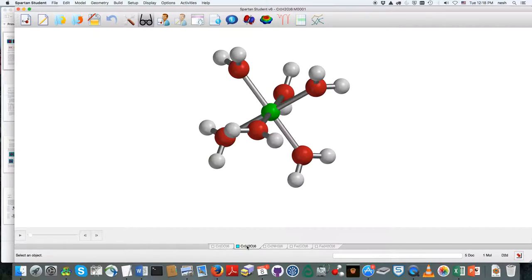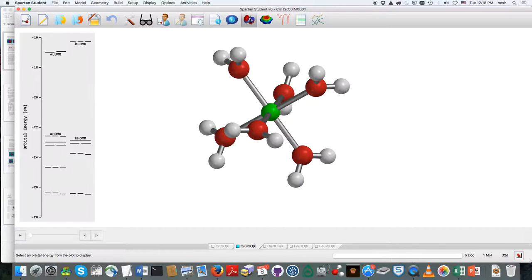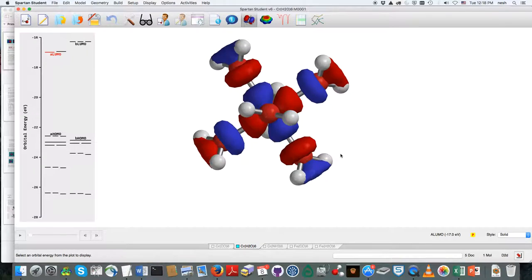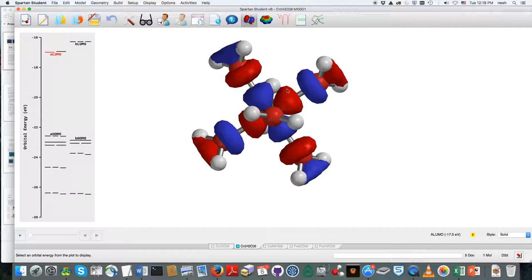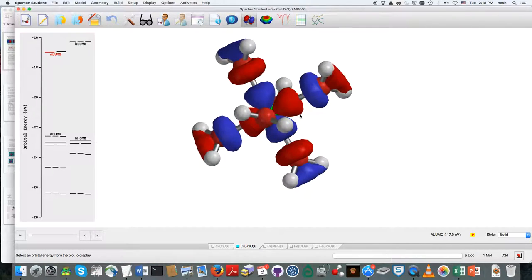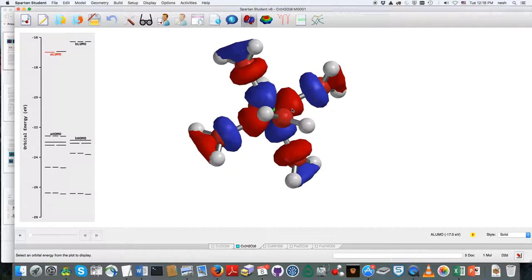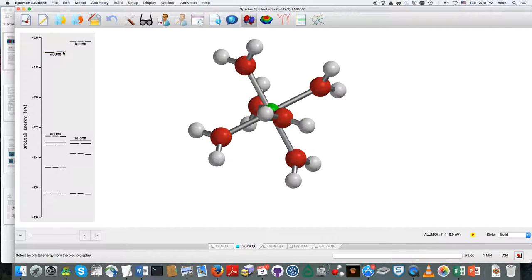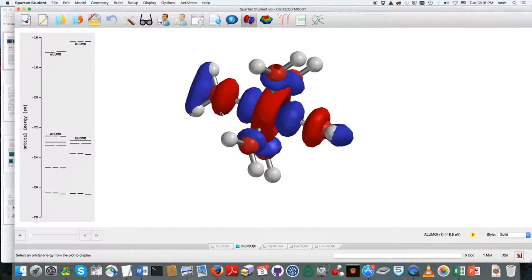I'm just pointing that out because here if we go into the chromium-water complex, and I'll do the same thing here, you can see, so I'm now at the EG orbitals. I can see a d-orbital there around the metal. There's, once again, a sigma star going on with respect to the ligands on both of them.